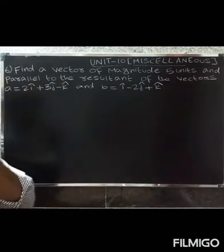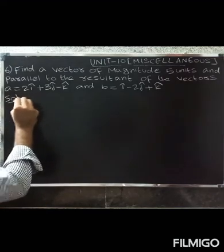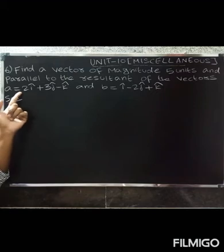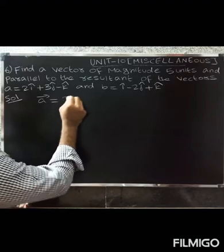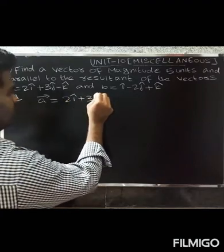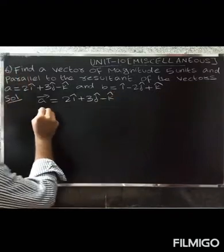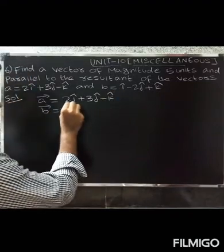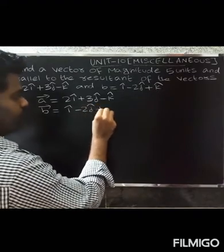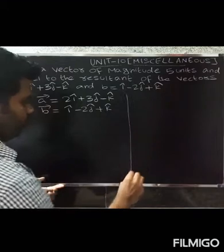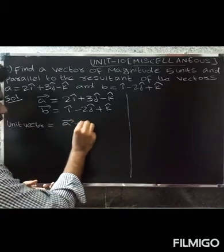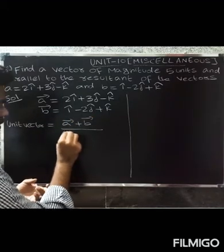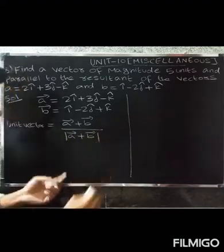So you need a vector of magnitude 5 units parallel to the resultant. The unit vector formula is: (a vector + b vector) divided by modulus of (a vector + b vector). First, a vector equals 2î + 3ĵ − k̂, and b vector equals î − 2ĵ + k̂.